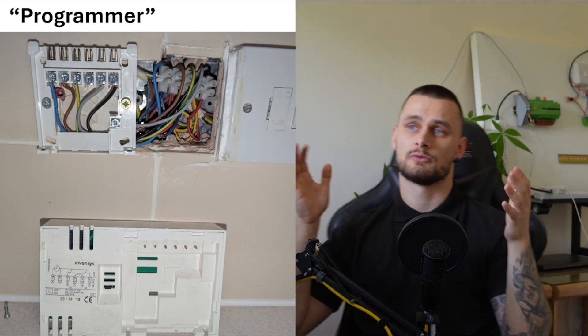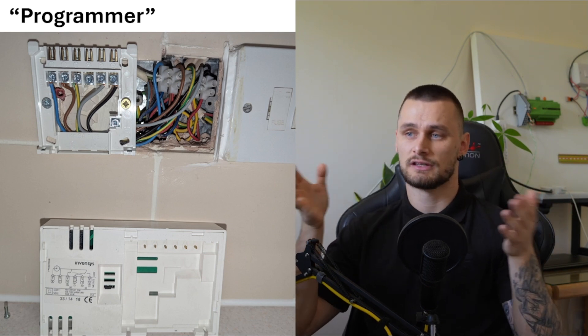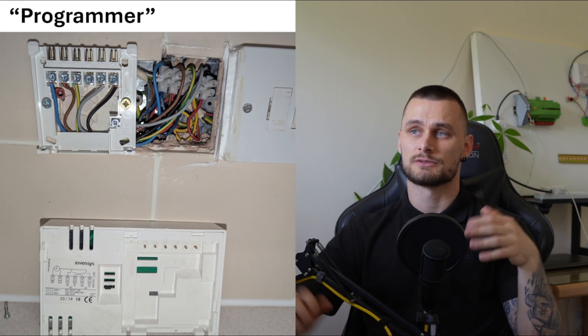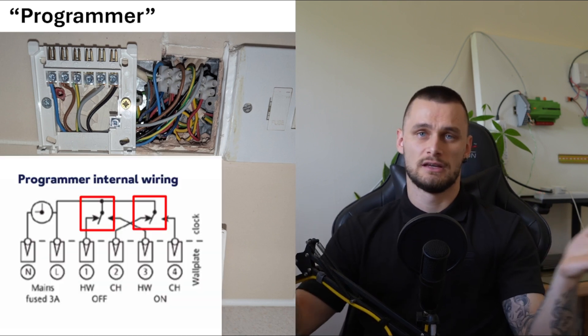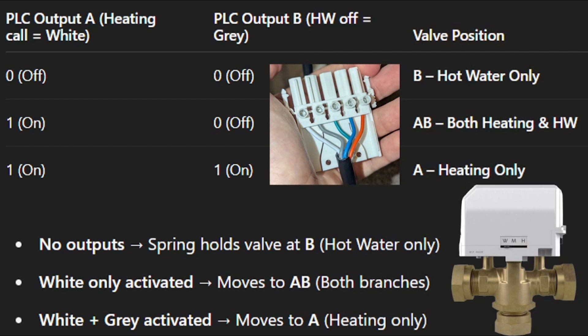If we want to go further and wire everything up, we need to think about the mid-position valve, which is the pivoting part of the system — it decides heating, hot water, or both. I've made a little diagram showing the logic. You have two relays, and depending on the combination of on and off, you decide whether you want hot water, heating, or both at the same time.